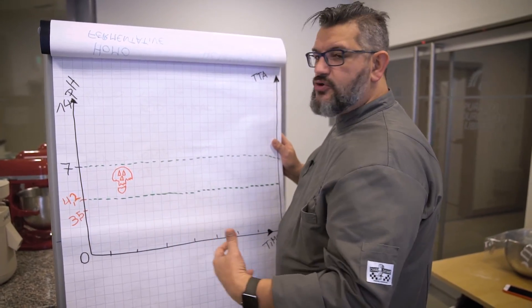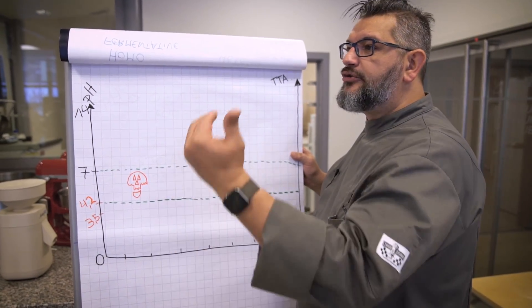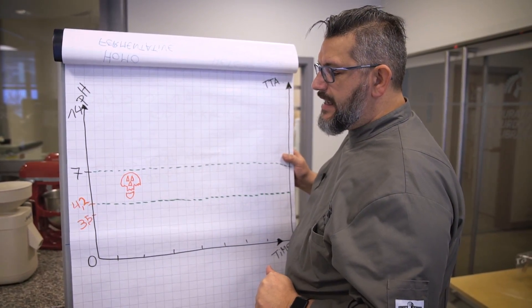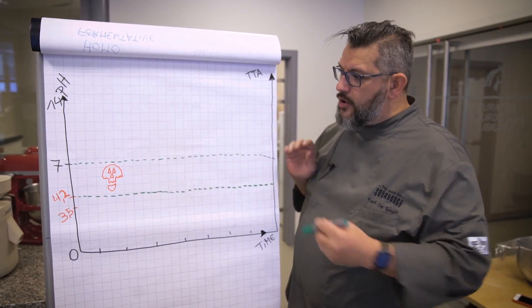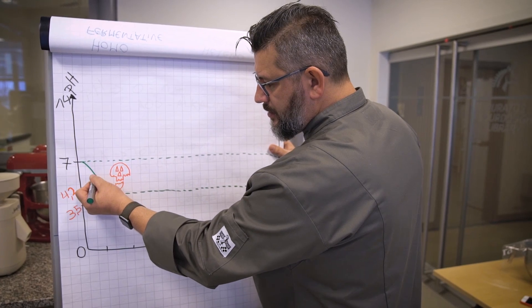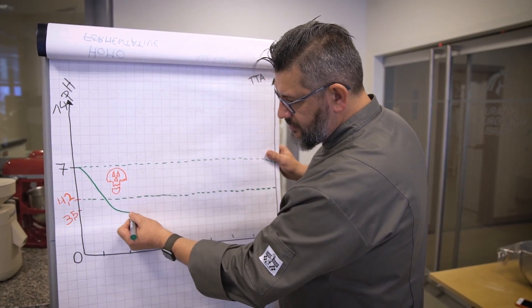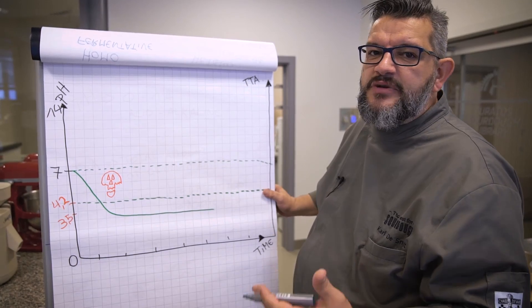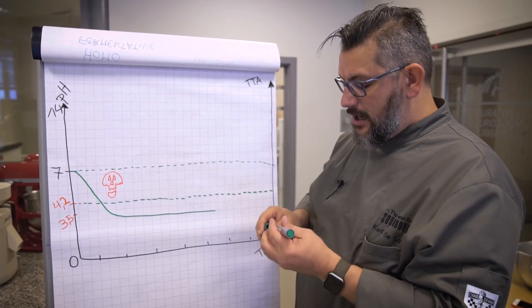For us, of course, when you blend water and flour, the pH will start to lower below 7. And we know that when you lower the pH at a certain moment, your sourdough will be stabilized around 3.5 to 3.7 of pH.